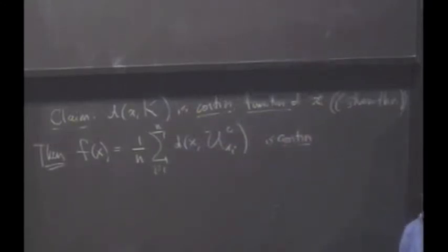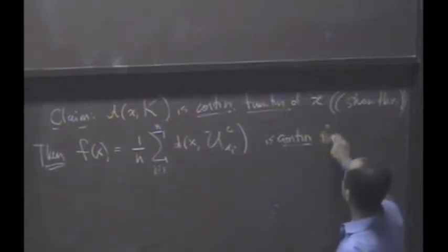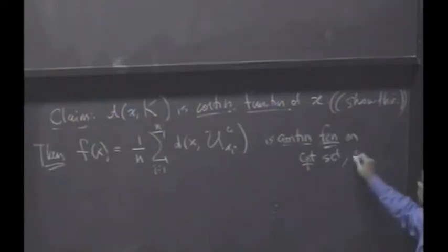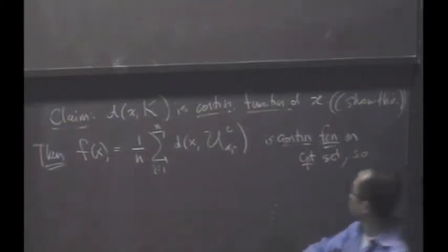What else? It's defined on a compact set. So it's a continuous function on a compact set. So by theorem we discussed last time, it must do what? It must do what? Attain its maximum minimum.